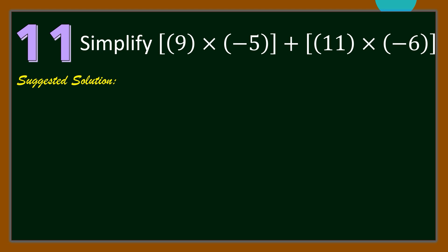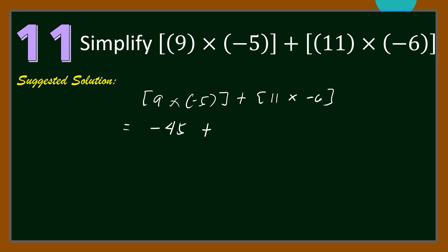We begin with 9 times negative 5, and then followed by 11 times negative 6. 9 times negative 5 is negative 45, and 11 times negative 6 is negative 66. The final answer is negative 111.